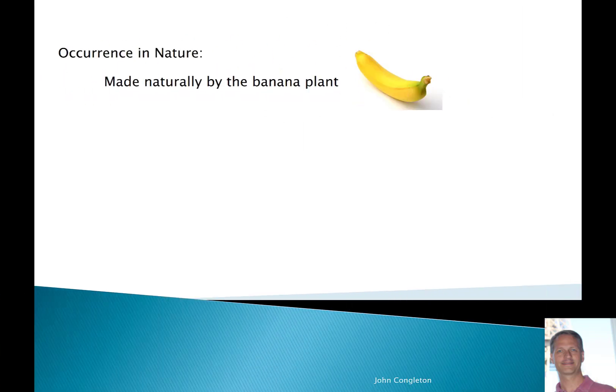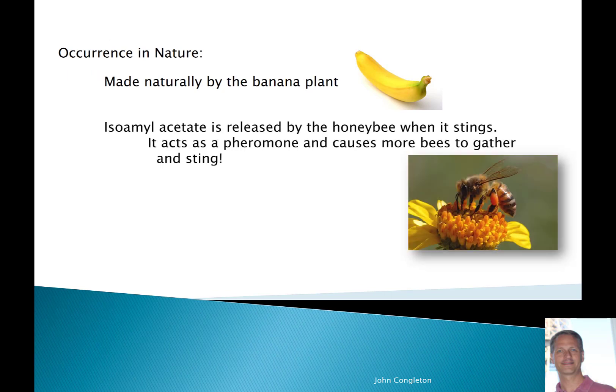There's an interesting occurrence in nature. It's made naturally by the banana plant. Isoamyl acetate is also released by the honeybee when it stings and acts as a pheromone, causing more bees to gather and sting.